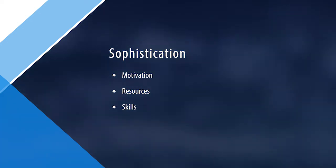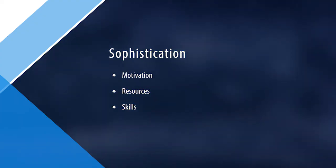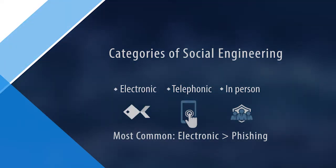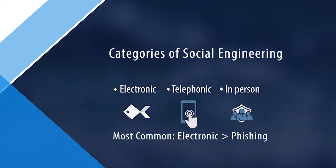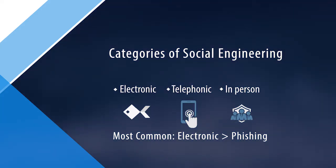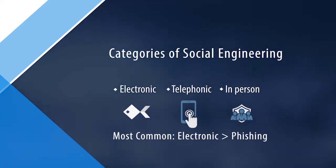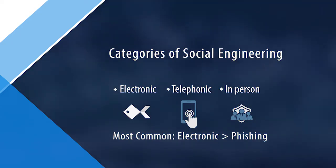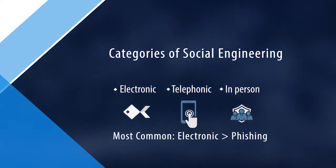Some attacks may be easily spotted, whereas a state-sponsored attack may have significant resources to carry out the attack. There are three major categories of social engineering: electronic, telephonic, and in-person. Of the three, phishing is the most common because it is easy to do, there are no geographical limitations, and it works.